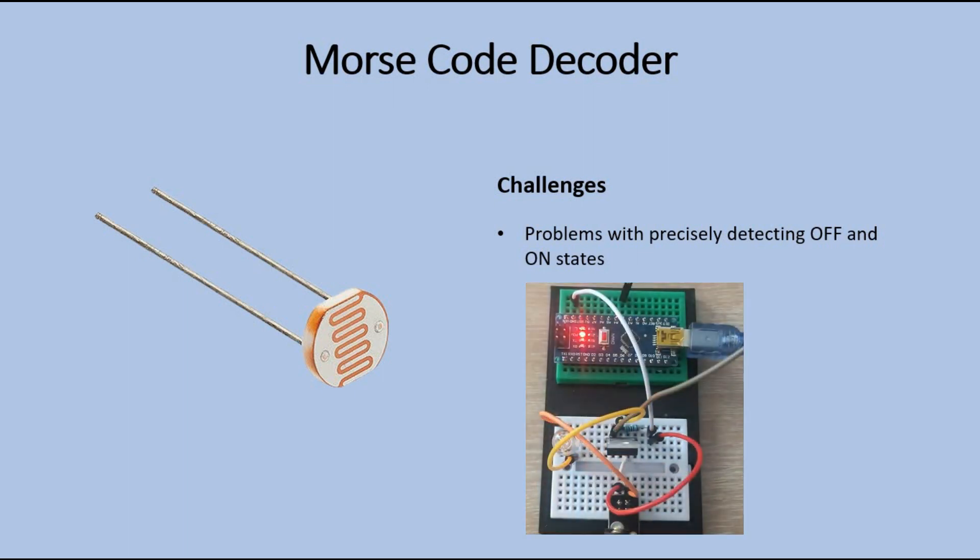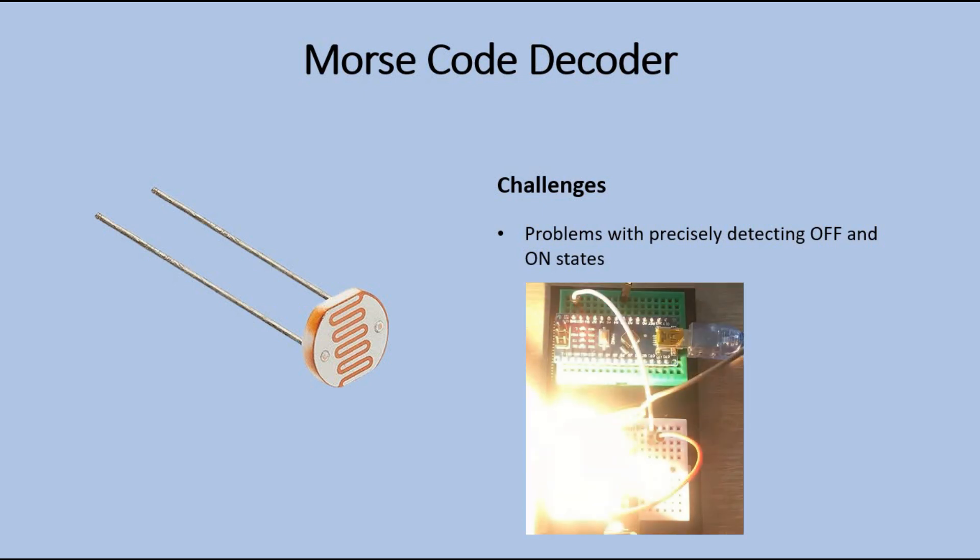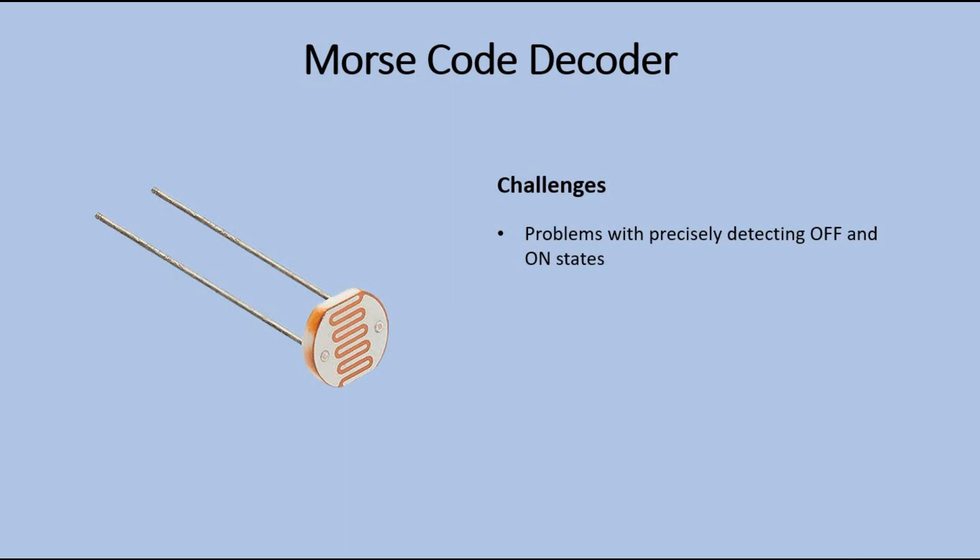That made recognizing the start and end of the signal super difficult. It would only work when the signals like dots and dashes were long enough, e.g. one second for a dot, three seconds for a dash. If you had shorter signals, that simply would not have worked.